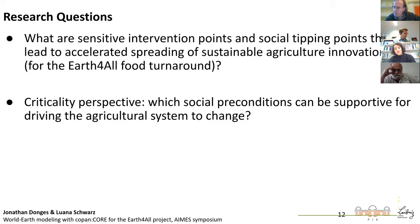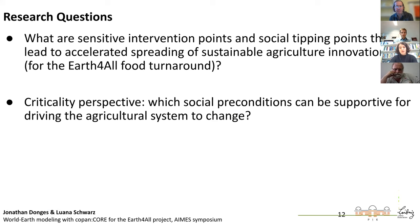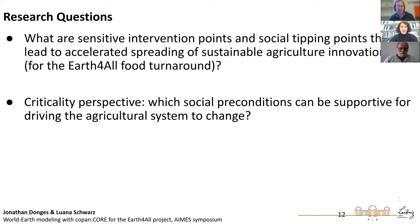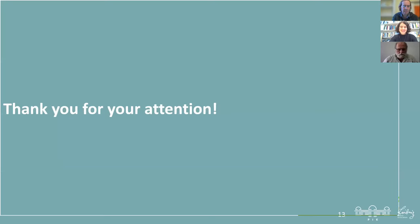Some research questions we want to ask of the model concern sensitive intervention points and possibly social tipping points that could lead to accelerated spreading of sustainable agriculture innovations in the Earth for All context. We would also like to take a criticality perspective and look at which social preconditions can be supported to drive agricultural systems to change. That's it for my side.